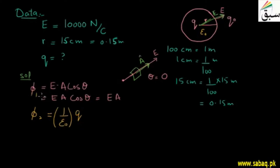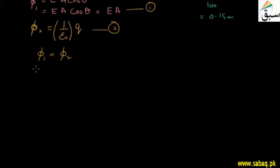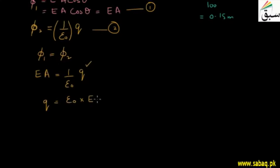Since both expressions represent the same electric flux, we equate phi₁ = phi₂, giving us: E × A = (1/ε₀) × Q. Therefore, Q = ε₀ × E × A. The value of ε₀ is 8.85 × 10⁻¹² coulomb² per Newton meter².